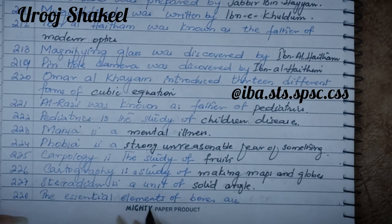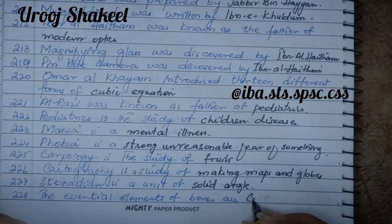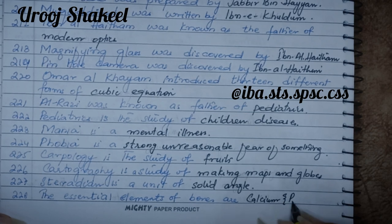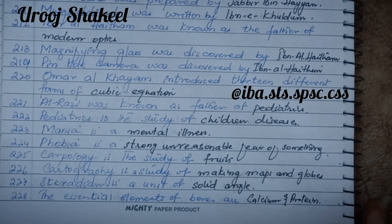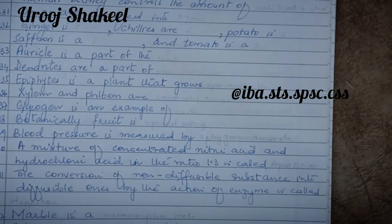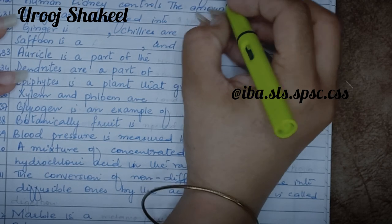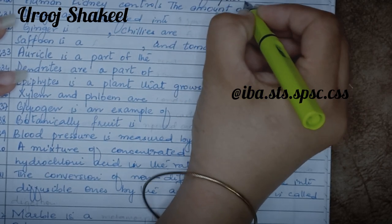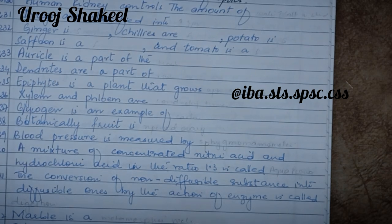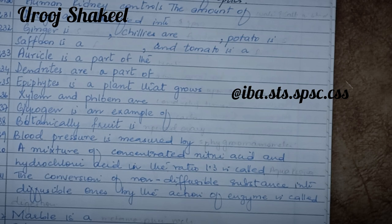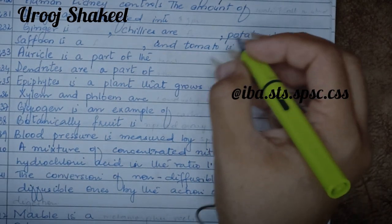The essential elements of bones are calcium and protein. The human kidney controls the amount of water and salt in the blood. Urine is produced in the kidney; the kidney performs filtration in the body, passing out urine and controlling the water and salt levels in the blood.